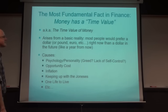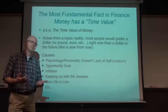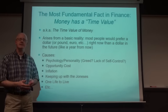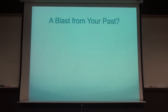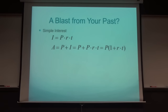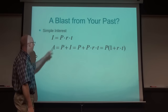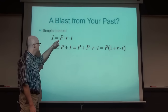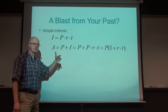There are lots of possible causes for the time value of money, and what we're trying to do is model this - not just with savings accounts, but in lots of situations. A blast from the past: hopefully you've seen formulas for simple interest and compound interest before. For simple interest, I = P × R × T, where I is the amount of interest earned, P is the principal, R is the interest rate (typically annual), and T is time in years.